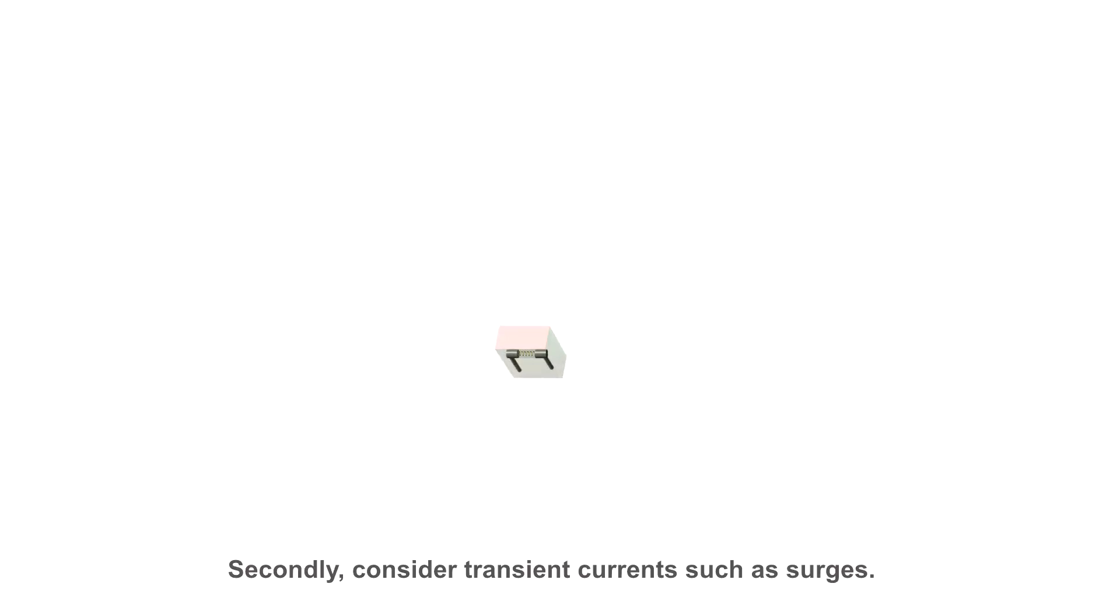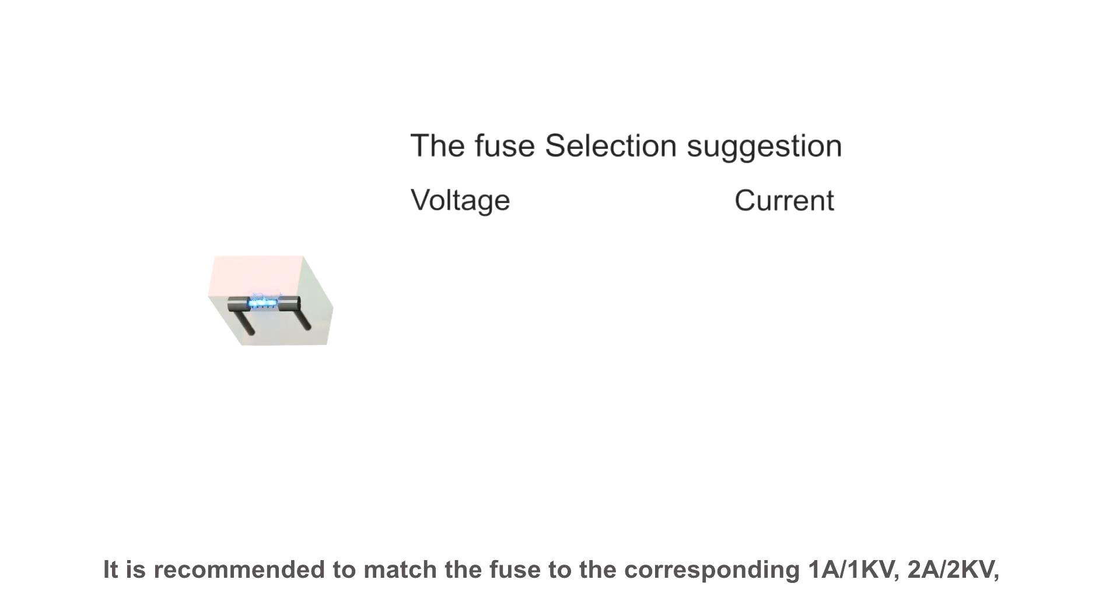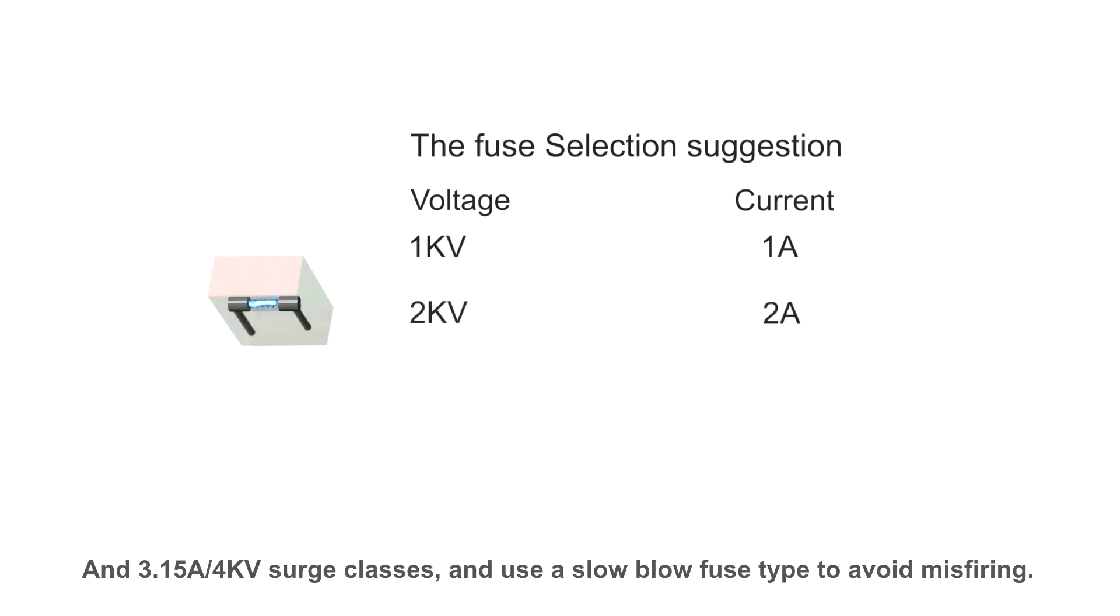Secondly, consider transient currents such as surges. It is recommended to match the fuse to the corresponding 1A 1KV, 2A 2KV, and 3.15A 4KV surge classes and use slow blow fuse to avoid misfiring.